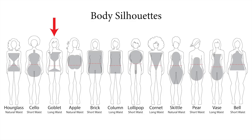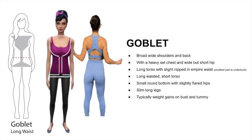Moving on to the goblet shape. The key features are broad, wide shoulders and back with a heavy-set chest, long torso with a slightly nipped-in upper waist. The smallest part is the underbust. The goblet has a long torso, short hips, a small round bottom with slightly flared hips, slim long legs, and weight gain is typically around the bust and tummy.